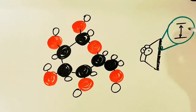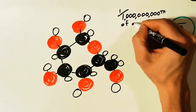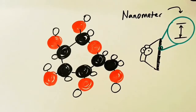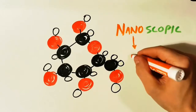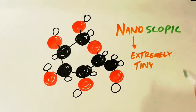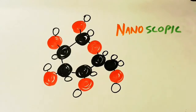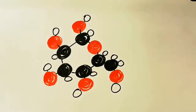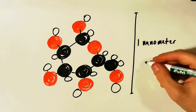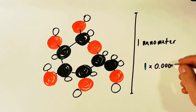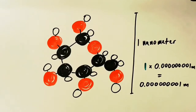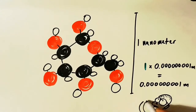Using the power of 10 again: to describe the size of our sugar molecule, we slice our meter into 1 billion pieces so that each one is one billionth of a meter across — we call these nanometers. Anything this small we call nanoscopic. 'Nano' means extremely tiny and 'scopic' means vision or to see, so nanoscopic is so small that even a microscope can't help you see it. Our sugar molecule is about 1 nanometer across: 1 times one billionth of a meter equals 0.000000001 meters.